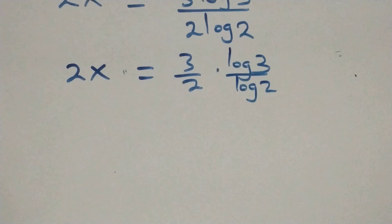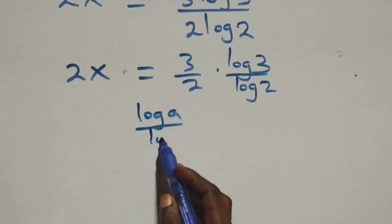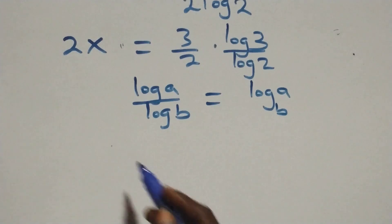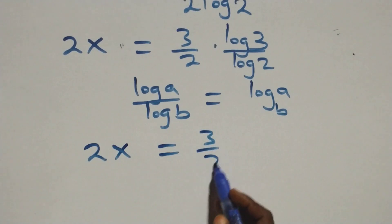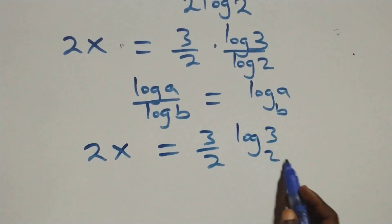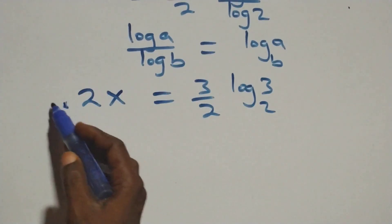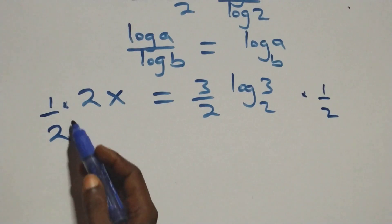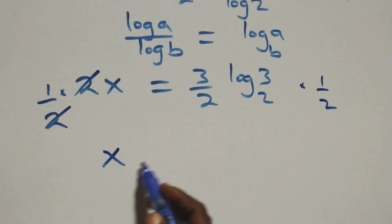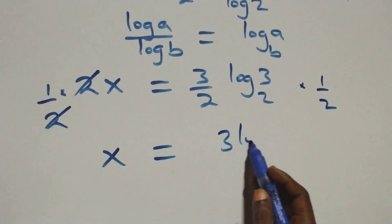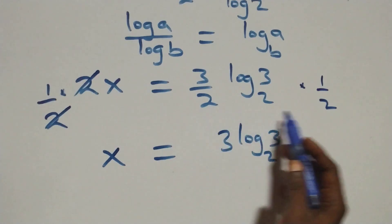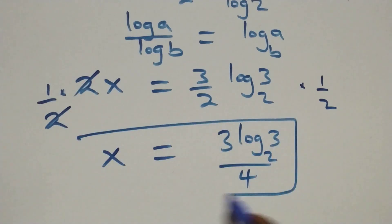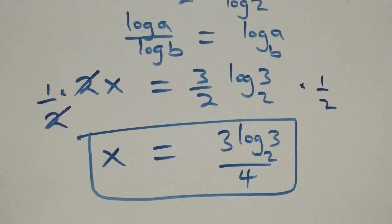Applying the change of base formula, log three over log two becomes log three to base two. So two x equals three over two times log three to base two. These twos cancel each other, and x equals three log three base two. We can write this as three log base two of three, all over four, which is the value of x.